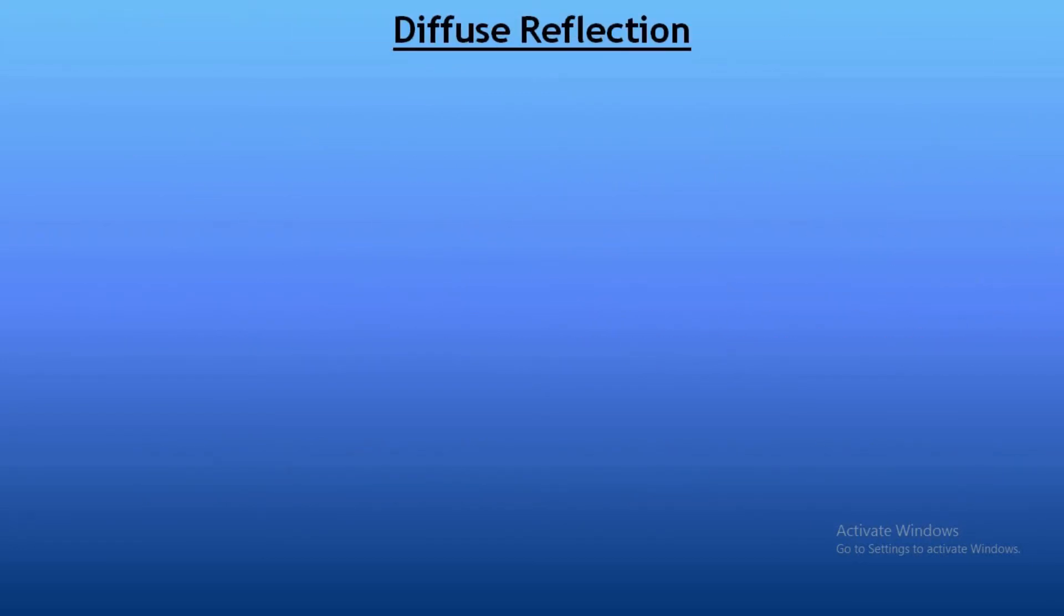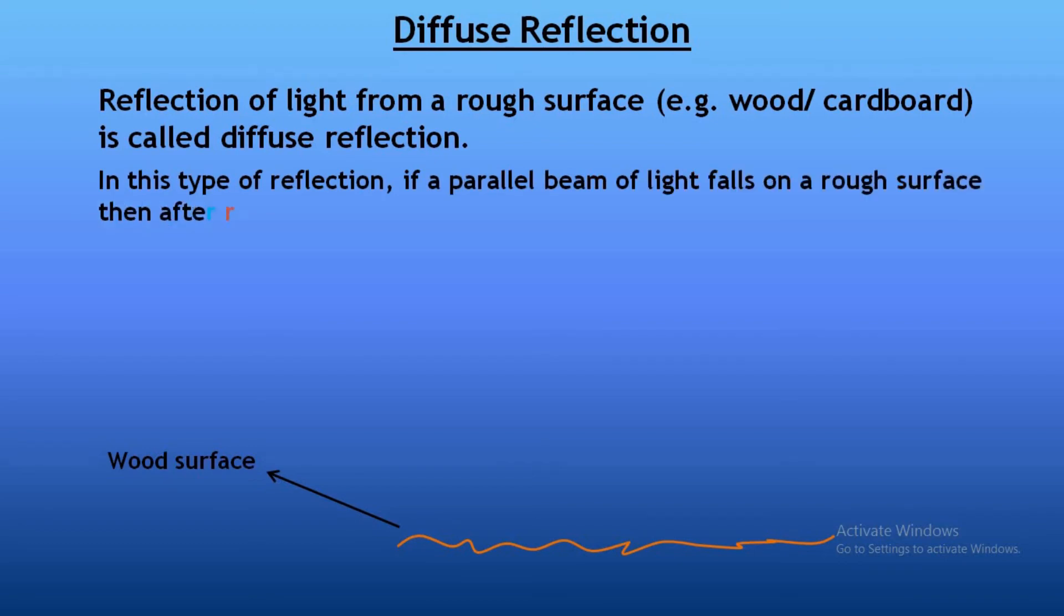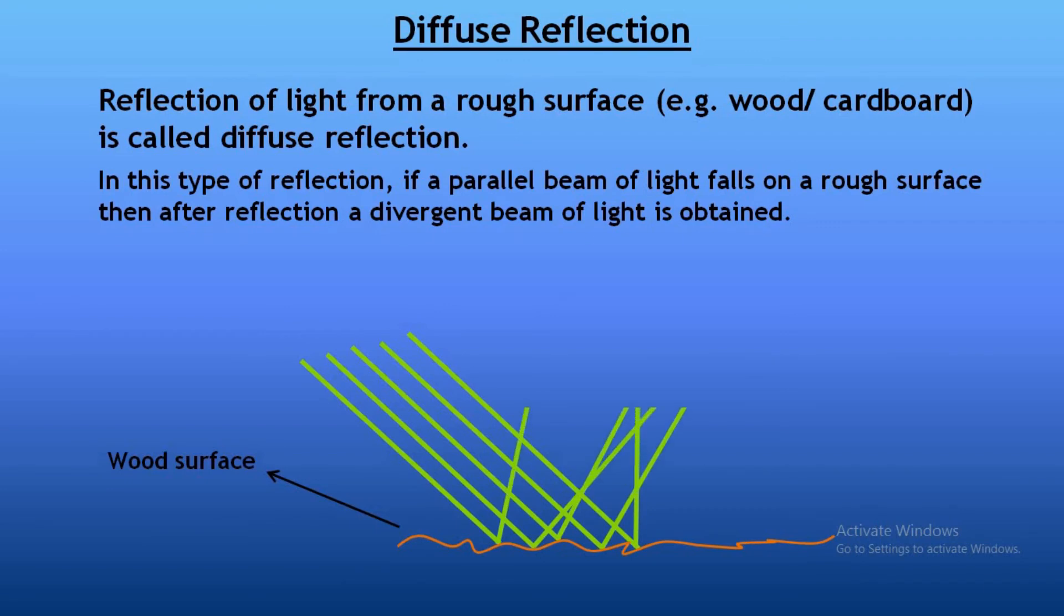Diffuse reflection: Reflection of light from a rough surface like wood or cardboard surface is called diffuse reflection. In this type of reflection, if a parallel beam of light falls on a rough surface, then after reflection a divergent beam of light is obtained.